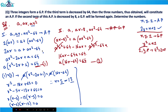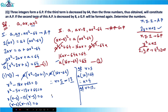If r = 5: substituting into a(r² − 2r + 1) = 64 gives a(25 − 10 + 1) = a × 16 = 64, so a = 4. If r = 13: substituting gives a(169 − 26 + 1) = a × 144 = 64, so a = 64/144, which is not an integer. Since the question requires three integers, r = 13 is not valid.